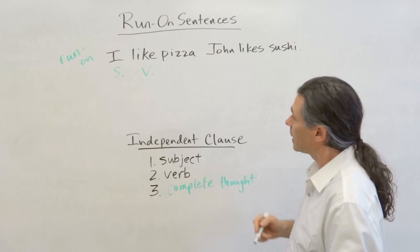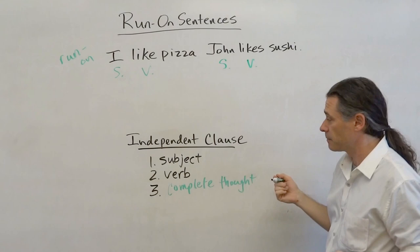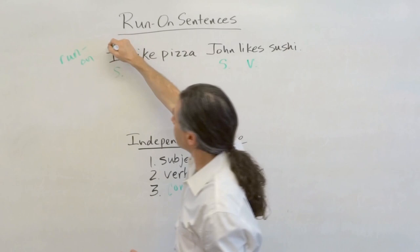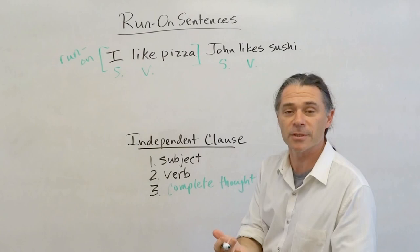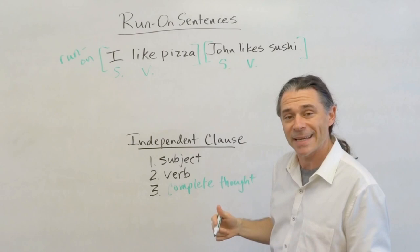So, looking at the second part, again, John is the subject. Likes is the verb. John likes sushi. Does this express a complete thought? It does. So what we have here are two complete thoughts. I like pizza. Everyone understands what I'm saying here. If I say John likes sushi, this is also an independent clause. Subject, verb, complete thought. People will understand you when you say this.